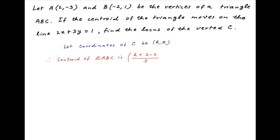Similarly, the ordinate of the centroid is the sum of the ordinates of points A, B, and C divided by 3. This simplifies to h/3, (k - 2)/3.